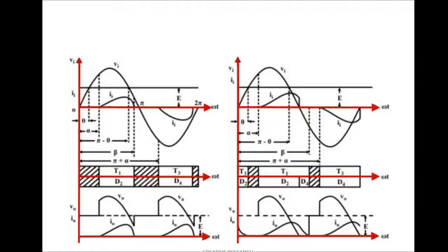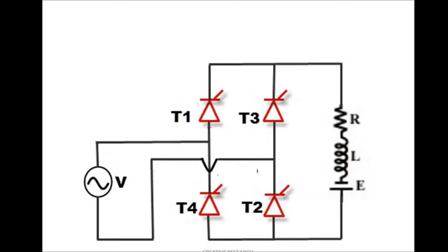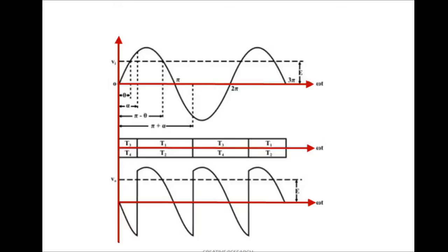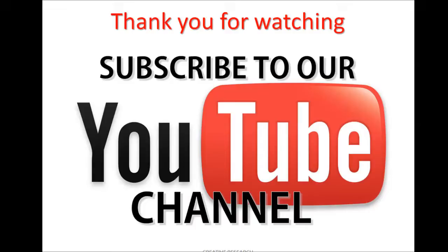By giving different firing angles you can control the output DC voltage. In the case of a fully controlled rectifier, we use four different thyristors and you can control it totally by giving the firing angle for two different types of thyristors. You can control the output power and current by giving a gate voltage or firing angle to the thyristors. This is the output waveform — we get the output wave by giving different firing angles to the input AC signal. This pulsed DC can be converted to fixed DC by using a filtering capacitor after that circuit. Thank you for watching this tutorial — please subscribe to our YouTube channel.